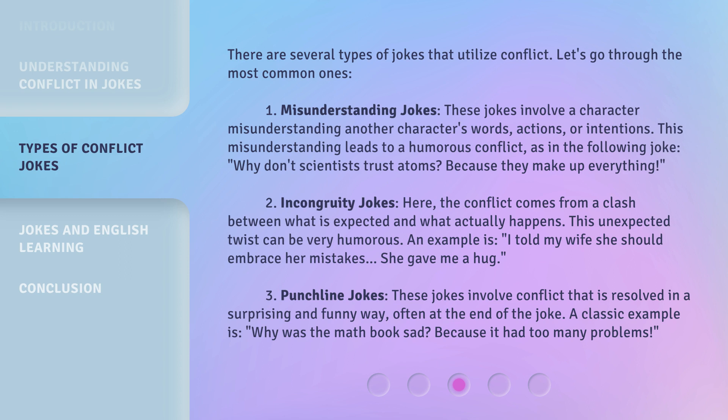2. Incongruity Jokes: Here, the conflict comes from a clash between what is expected and what actually happens. This unexpected twist can be very humorous. An example is: I told my wife she should embrace her mistakes — she gave me a hug.